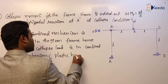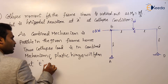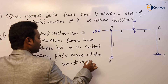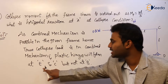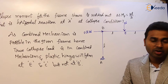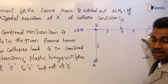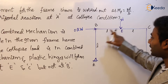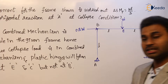Plastic hinges will form at E and C, but not at B. Since the true collapse load is in combined mechanism, plastic hinges form at E and C. Wherever a plastic hinge forms, the plastic moment MP will develop. At E a plastic hinge is forming, so plastic moment MP develops there. At C a plastic hinge is forming, so moment at C is MP. At B, plastic hinge is not forming, so the moment there is unknown. Therefore, consider the free body diagram of CD.